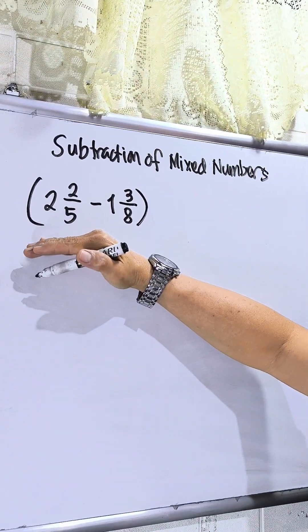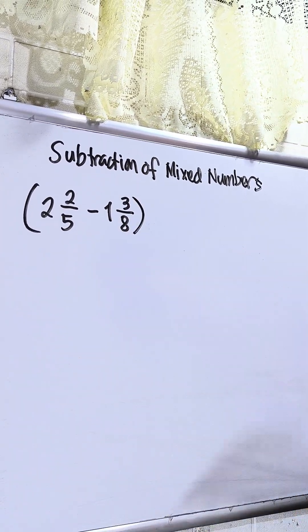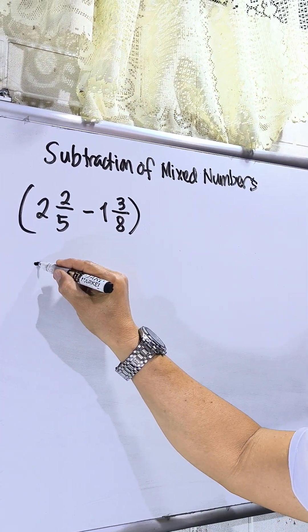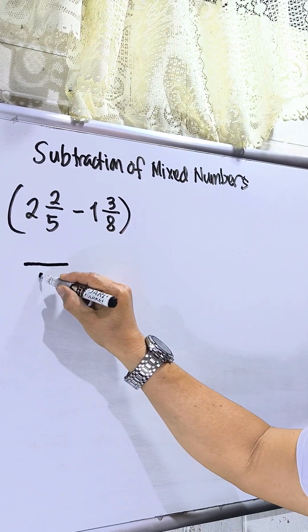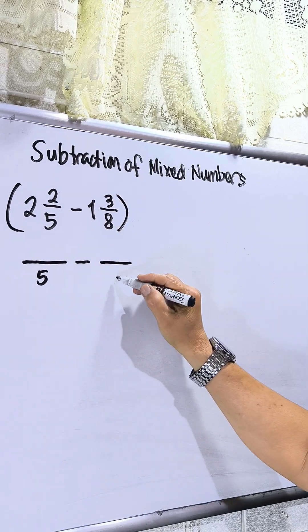So, I have here 2 and 2 over 5 minus 1 and 3 over 8. First thing to do is write the denominator. This is 5 and then the operation is subtraction. Then, the denominator of the second is 8.